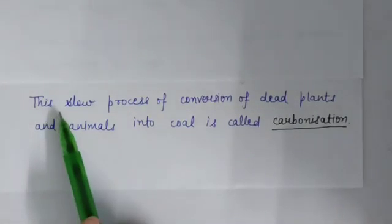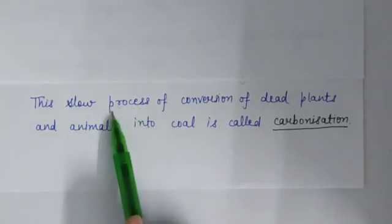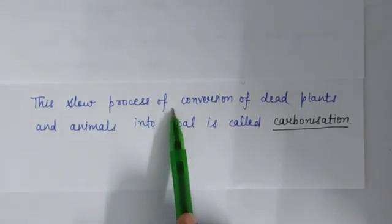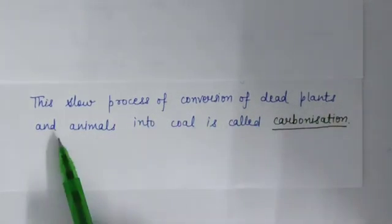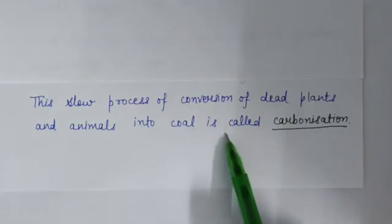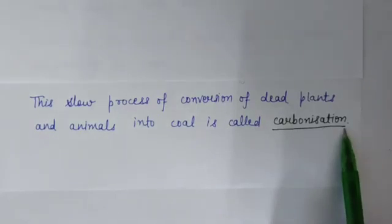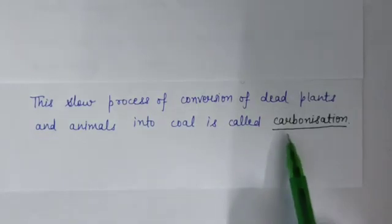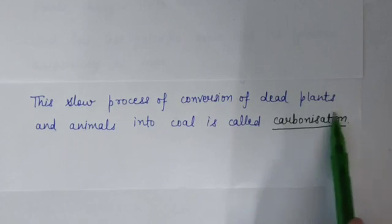The formation of coal is a slow process. This slow process of conversion of dead plants and animals into coal is called carbonization, because coal mainly consists of carbon.